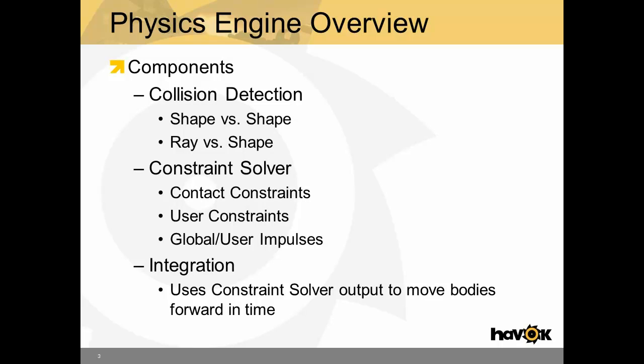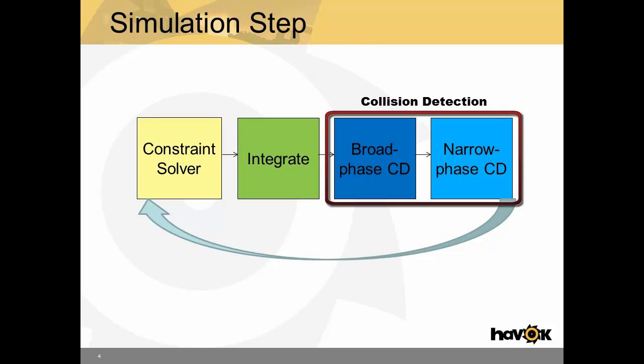The last main component of a physics engine is integration. Integration simply takes the output from the constraint solver and uses that to move the bodies forward in time. So let's look at a basic simulation step. In Havoc, constraint solving actually happens first based on the output from the previous frame. So contacts are resolved and any other constraints the user may have added. Then the bodies are integrated forward. Lastly, contact points are generated for the following frame.